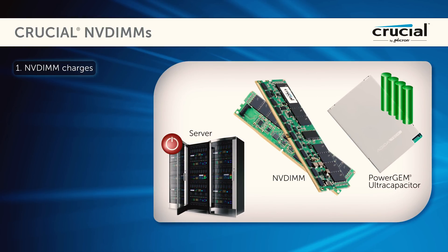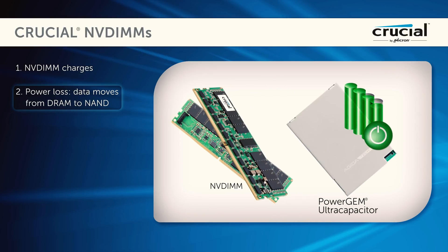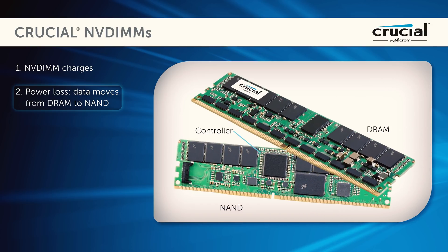When the power is cut off, the NVDIMM controller activates the power management circuitry that provides energy to the module. The energy is used to switch the multiplexers in order to communicate the shutoff between the host side memory controller and the onboard DRAM.